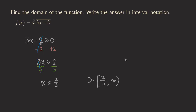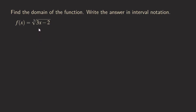Now let's look at the next example. The second function looks almost the same as the first, but it's actually quite different — this is the cube root of 3x minus 2. Because this is a radical with an odd index, the expression inside can be negative, positive, or zero, so there is no restriction on x. The domain for this function is all real numbers, written in interval notation as negative infinity to positive infinity, using parentheses for both.